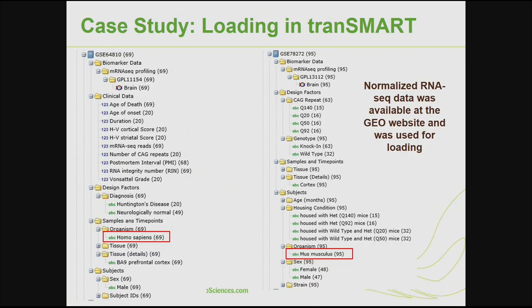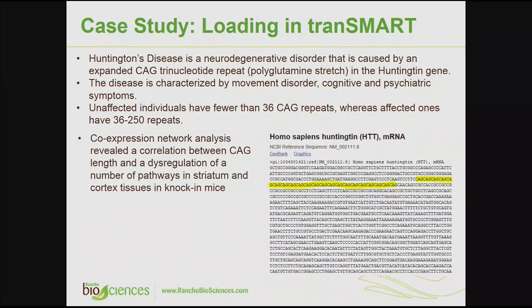The first dataset is RNA-seq expression profiling of human post-mortem brain tissues for Huntington disease and neurologically normal individuals. The second dataset from CHDI is transcriptome profiling in knock-in mouse models of Huntington disease. Huntington disease is a degenerative disorder caused by an expanded CAG trinucleotide repeat — a polyglutamine stretch in the Huntingtin gene. The disease is characterized by movement disorder, cognitive and psychiatric symptoms. Unaffected individuals have fewer than 36 CAG repeats and affected ones have more.